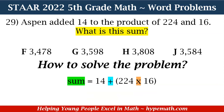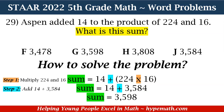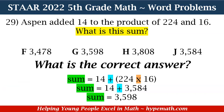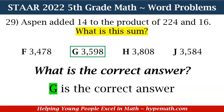All we need to do is go ahead and do the operations. First, we need to multiply 224 and 16. When I do that, that is equal to 3,584. Now that I have the product of 224 and 16, the next and final thing I need to do is add 14. So 14 plus 3,584 is equal to 3,598. That is my sum. Looking at the answer choices, G is our correct answer.